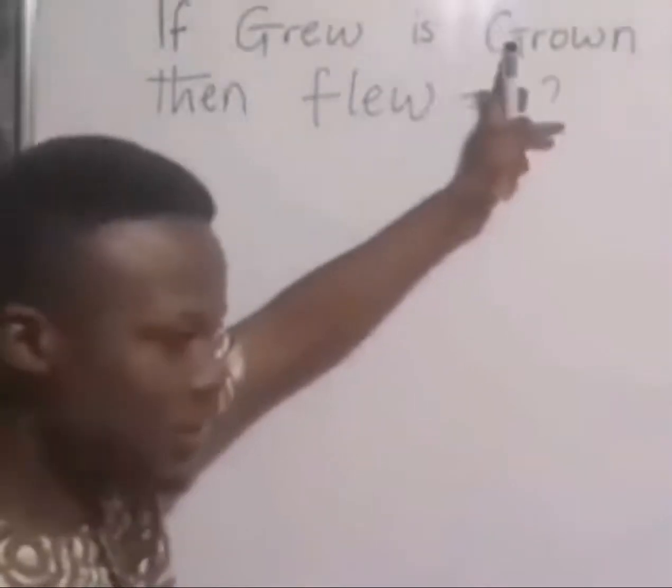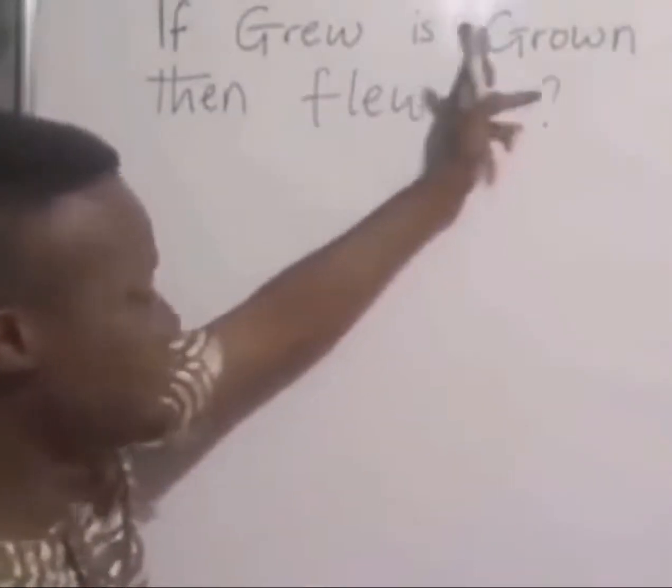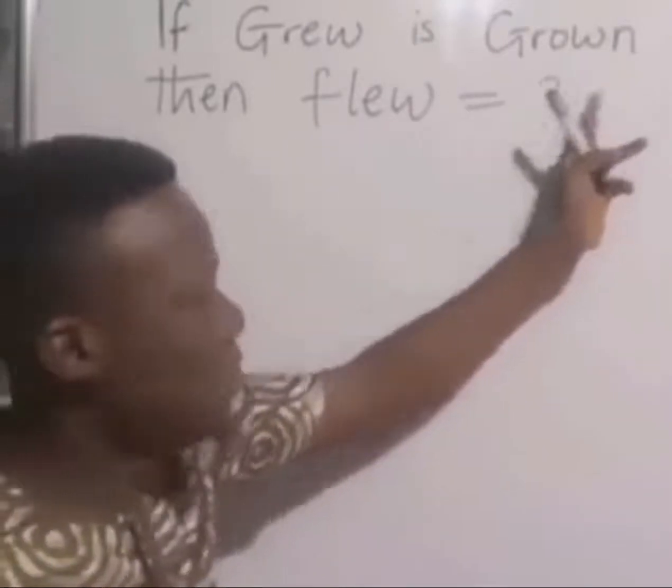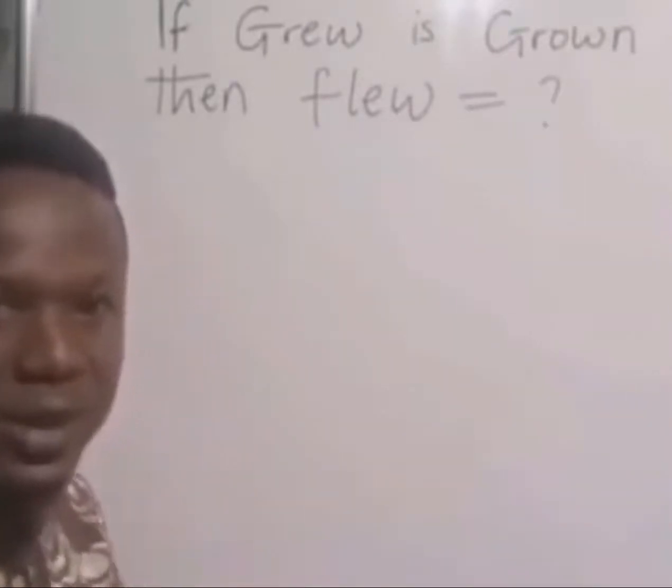Grew is to grown - the past tense and the past participle. Then flew, which is a past tense. If we want to get the past participle, look at what a mathematician will do.